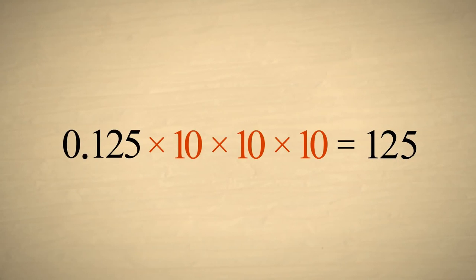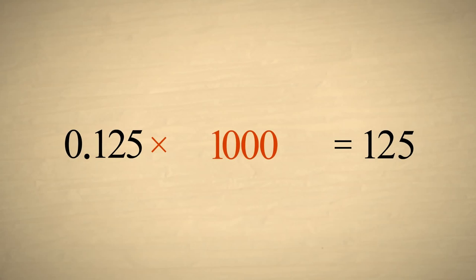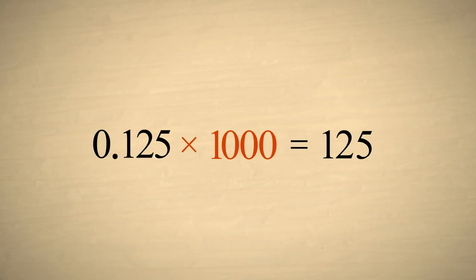So by multiplying our decimal number by ten three times, which is the same as multiplying by one thousand, we have produced an integer which is one thousand times the original number.